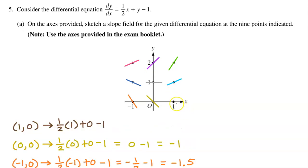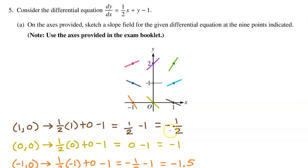At the point (1, 0), we have one-half times 1 plus 0 minus 1. This is negative one-half, so draw a decreasing slope but not as steep as a 45-degree angle.